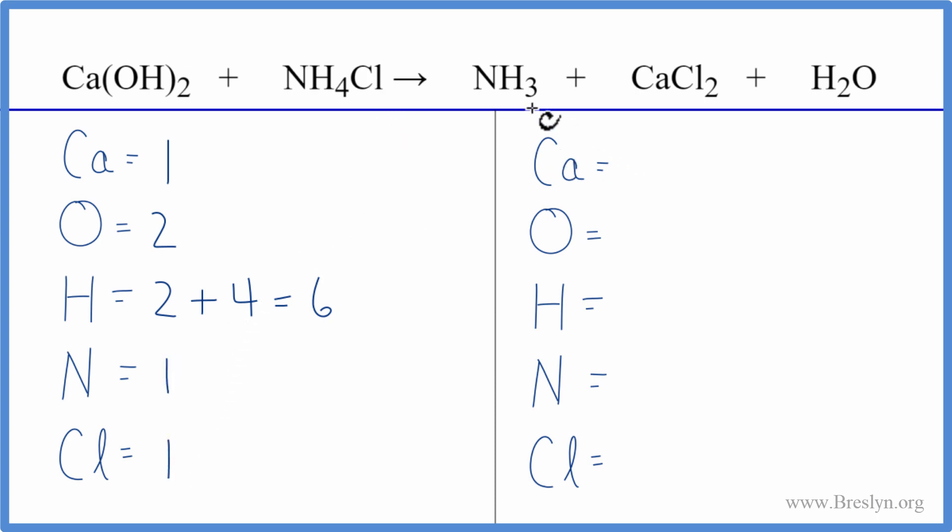On the product side, we have one calcium, one oxygen, just the one. Hydrogens, three, plus we have two over here. So we have five hydrogen atoms, one nitrogen, and then two chlorine atoms.